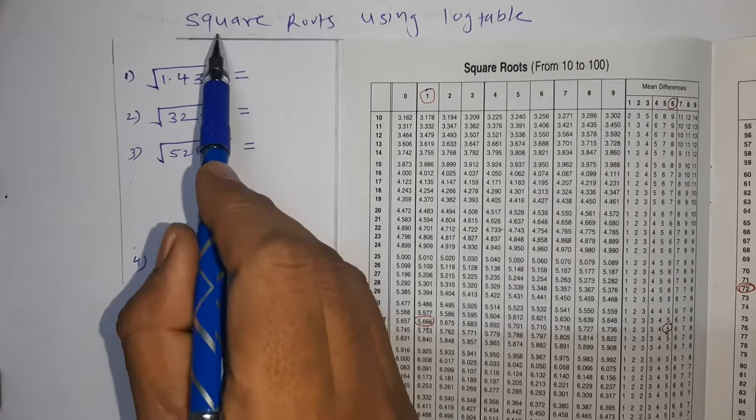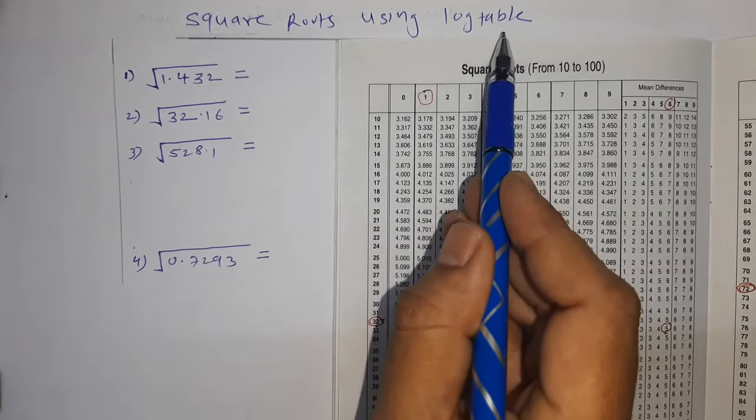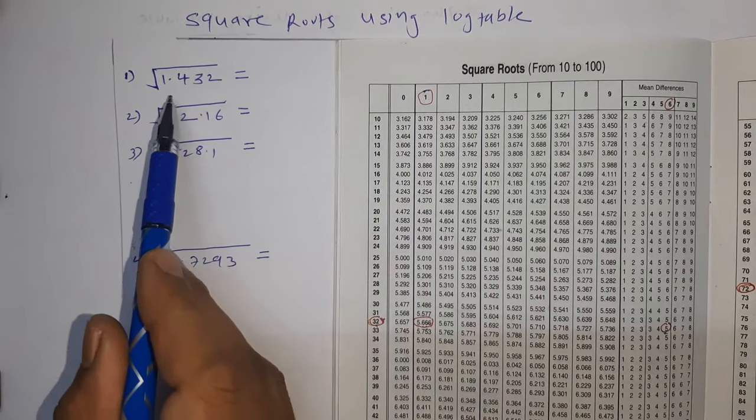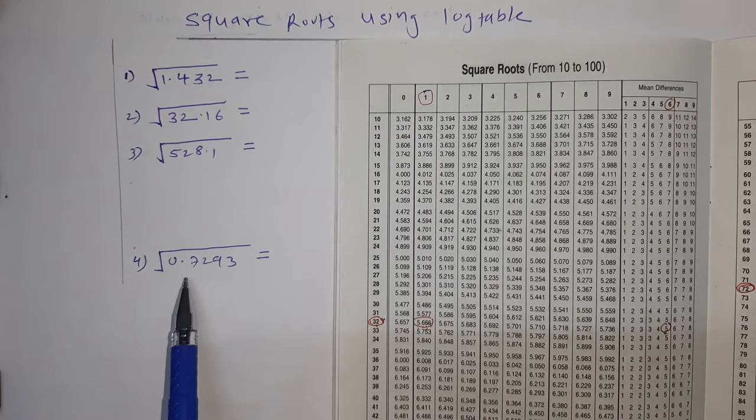Now we'll see how to find square roots using log table. We'll discuss one, two, three, four examples, all possibilities.